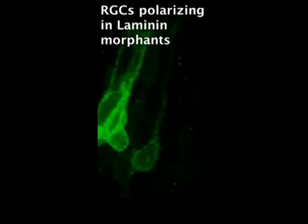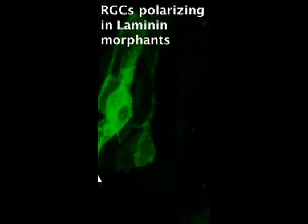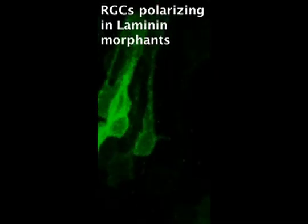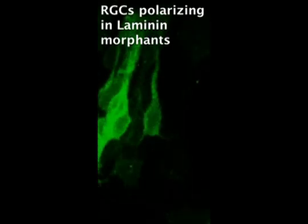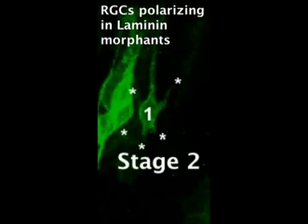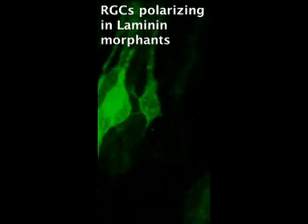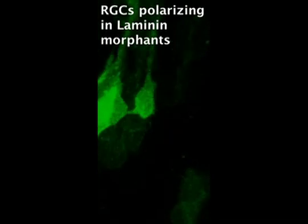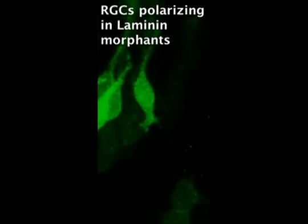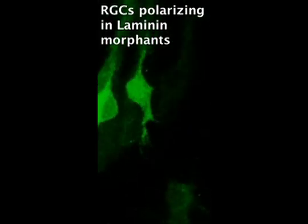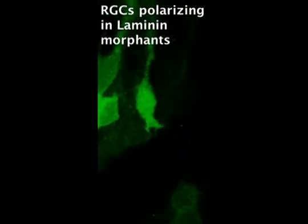To test this, we blocked laminin protein production using a morpholino oligonucleotide. In this context, retinal ganglion cells lost their highly directed polarization behavior and went through a stage two-like phase where they were multipolar, extended some transient neurites, the kinesin construct oscillated within the cell, and then finally the axon extended.